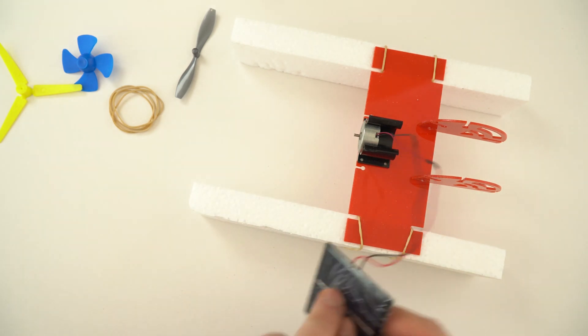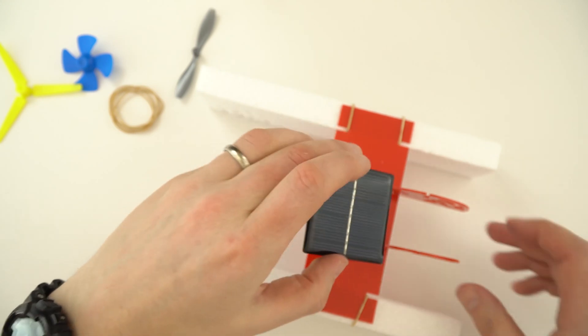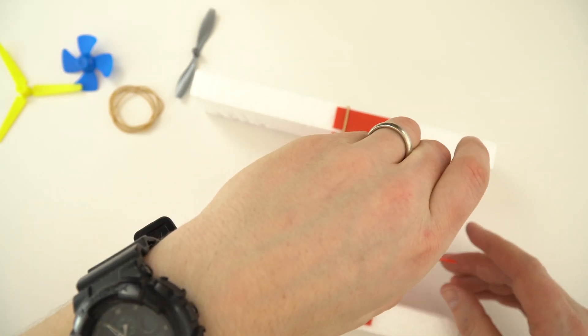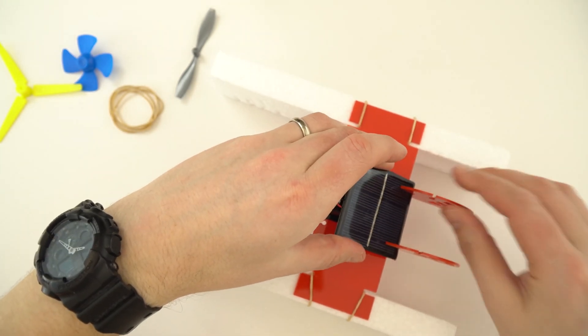I can then take the protective film off the solar panel, and this can now be slotted in at various angles into the holder at the back of the boat. So I'm just going to put mine here for the moment.